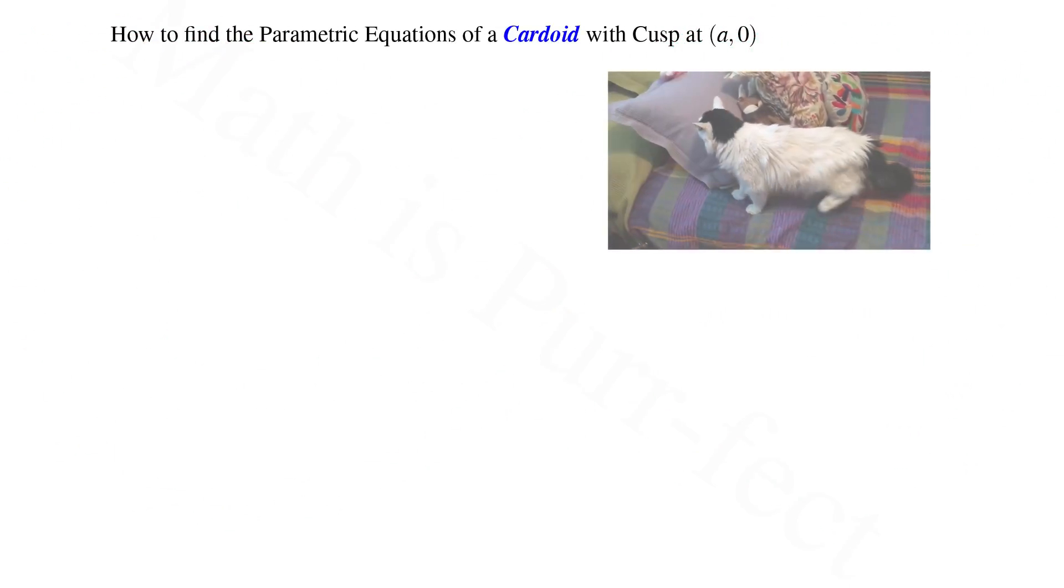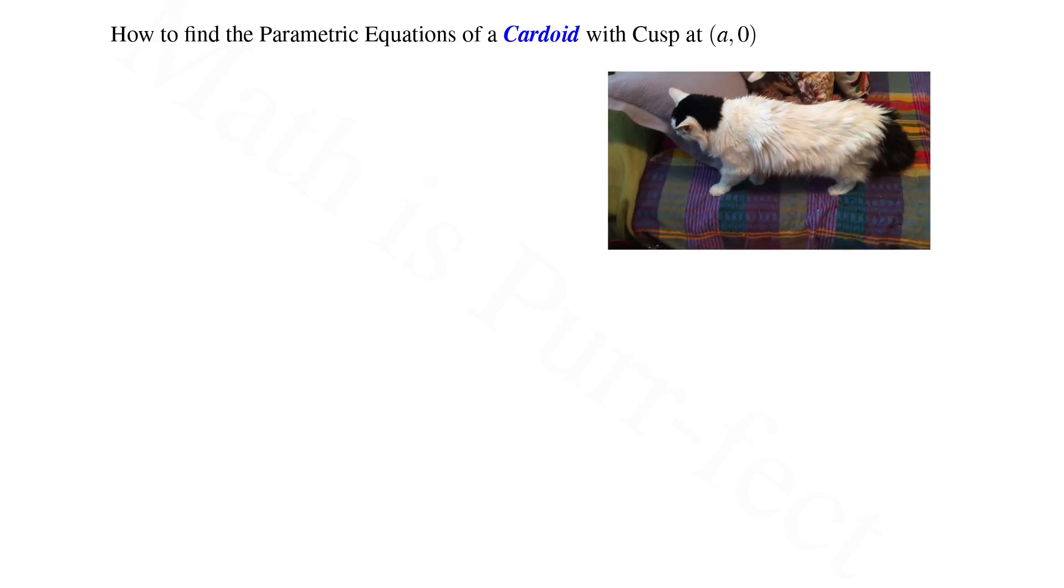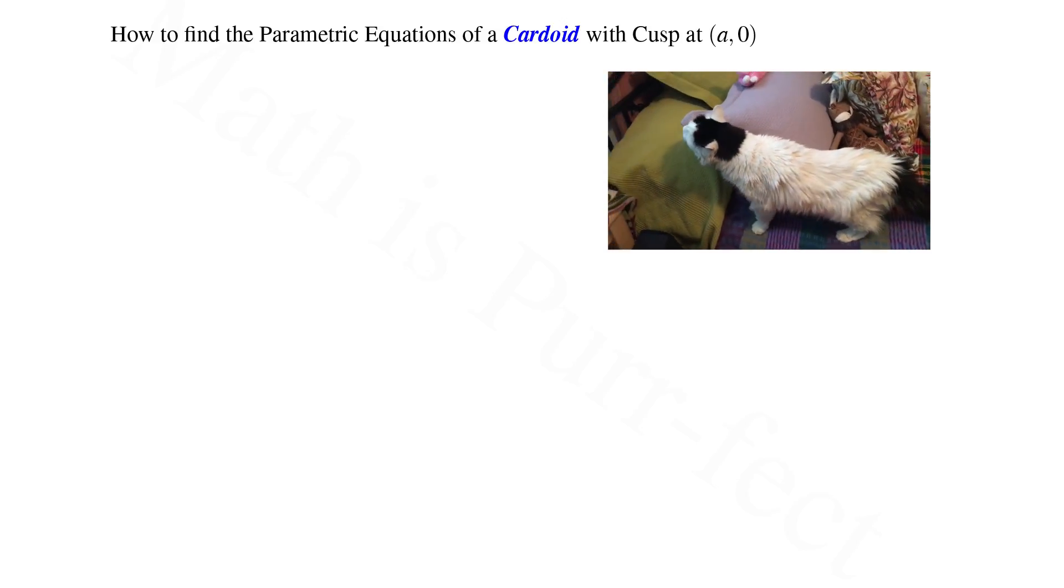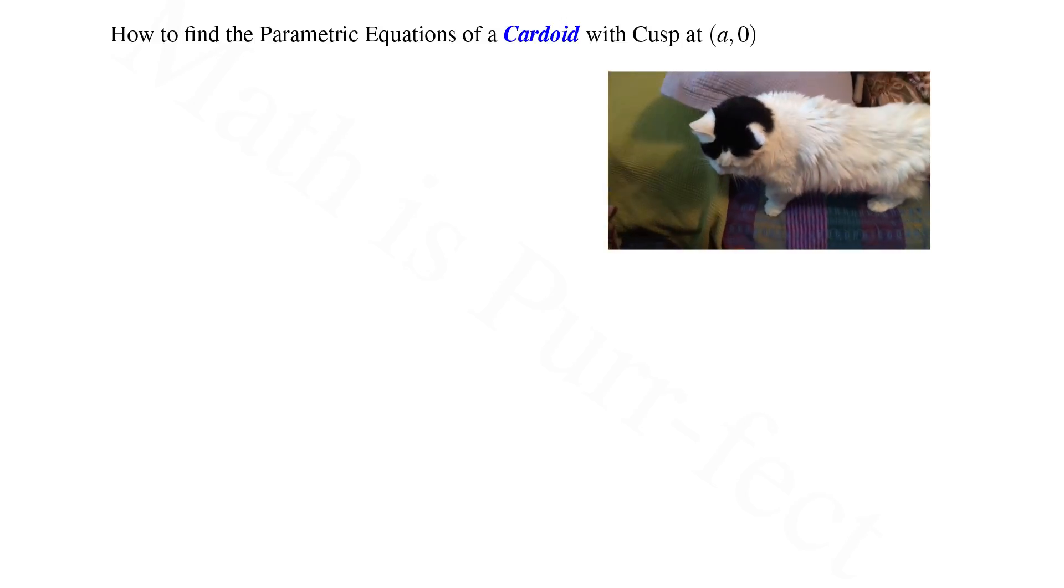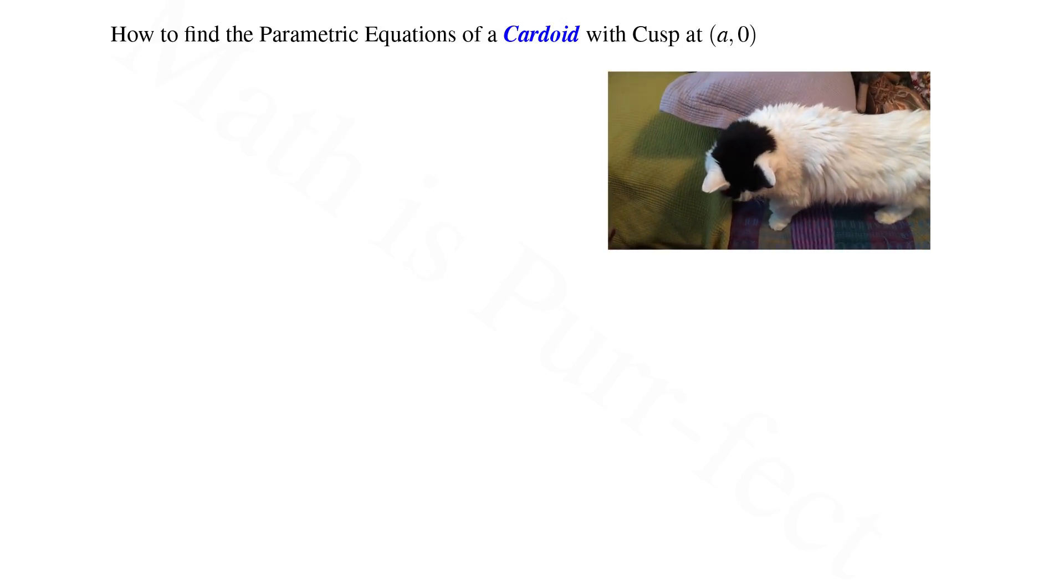Hello, this is Aloisa with Math Leopard. Today we are going to find the parametric equations for a cardioid with cusp located at a comma zero, where a is the radius of the circles used in its creation.